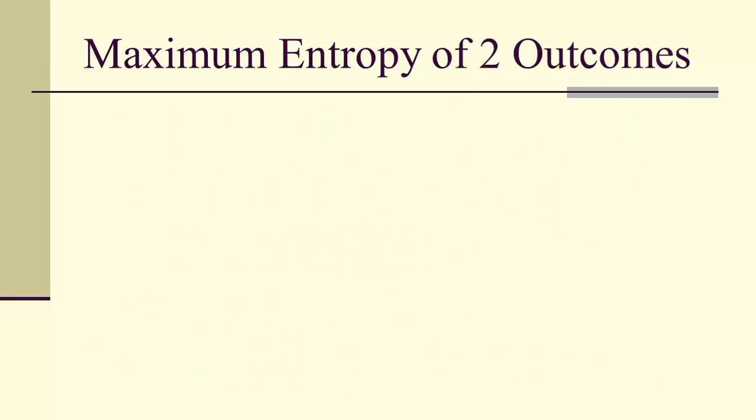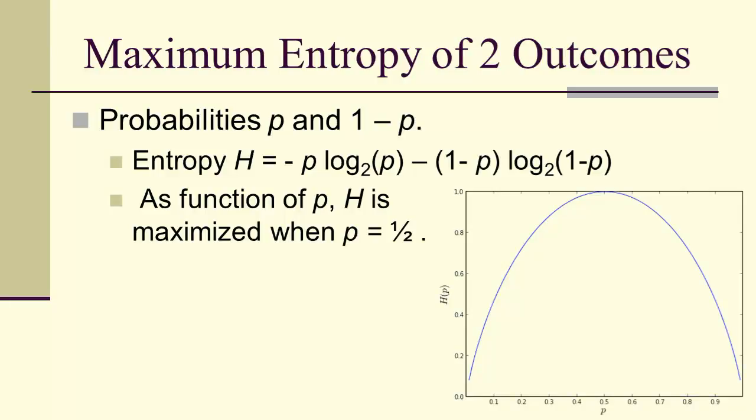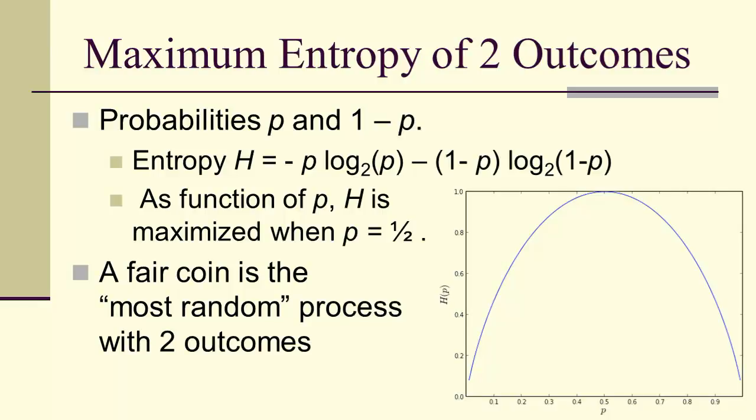Let's look at an example. If we've got two outcomes, then the probability of one outcome will be p and the probability of the other will be 1 minus p. The entropy would be negative p log base two of p minus (1-p) log base two of (1-p). As a function of p, the entropy is maximized when p equals a half. You can see that here. Here's the actual entropy as a function of p. And when p is equal to a half, an experiment with only two possible outcomes has maximum entropy. So in some sense, a fair coin is the most random process with two outcomes, i.e. the one with maximum entropy.